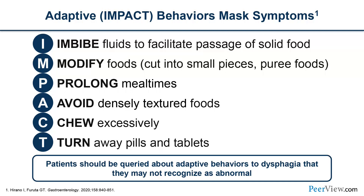Patients with EOE develop certain adaptive behaviors that they may not recognize as abnormal, and you can remember them using the mnemonic IMPACT. The typical patient with eosinophilic esophagitis cuts small bites, puts sauces on food, chews it for a long time, and when they start to swallow it, takes a sip of liquid to help swallow it, and they avoid meats, breads, and more dense foods. You should ask patients about whether they exhibit these adaptive behaviors to dysphagia, as they may not report them unless you ask specifically.